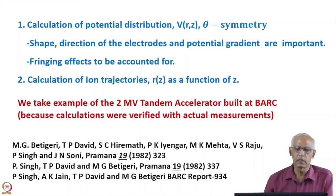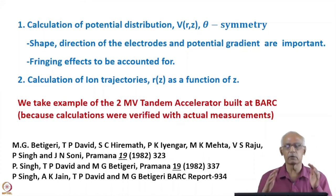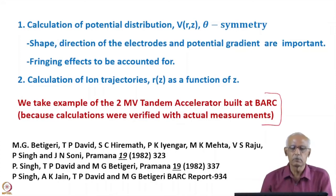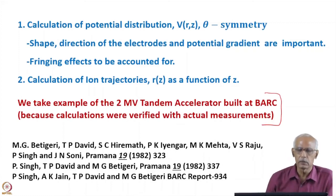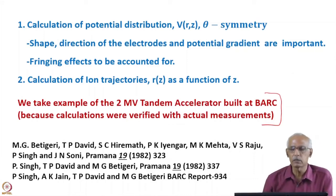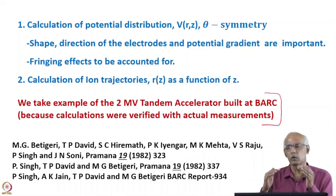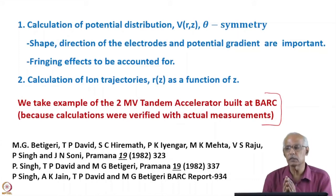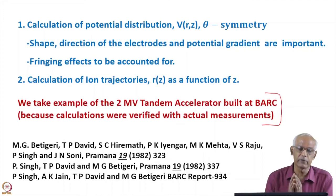As a simple example, I have taken a 2 million volt tandem accelerator built at BRC. The calculations were done, the accelerator was built based on those calculations, and the actual measurements matched the calculations very well. Some of the conclusions were that when you do the calculations, you have to take sufficient fringing fields into account. The shape of the electrodes, the direction of the electrodes, and the potential gradient are all important — fringing effects must be accounted for, otherwise you will not get correct results.